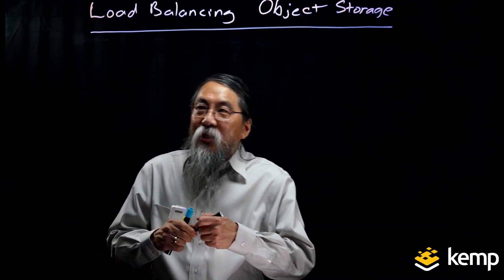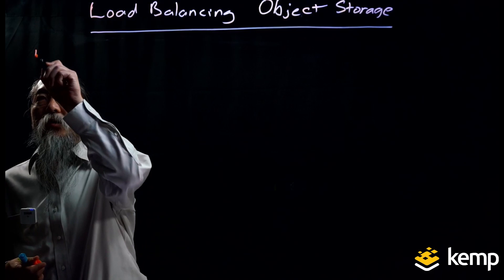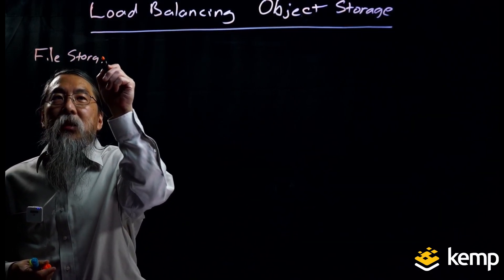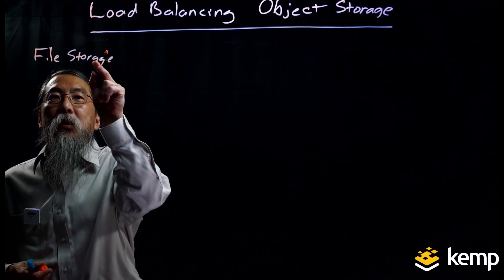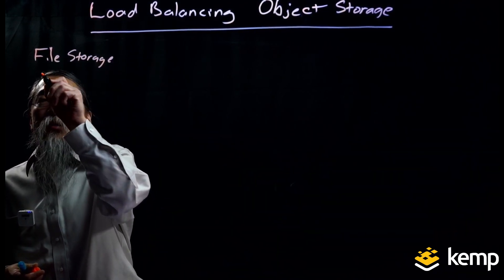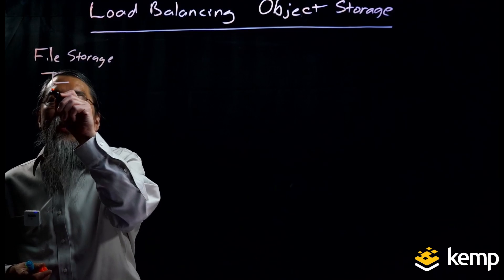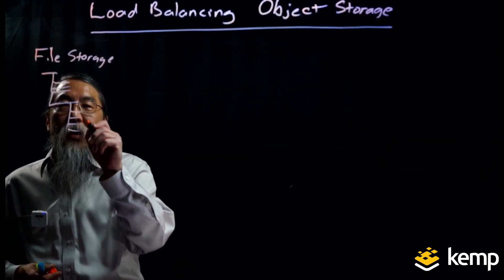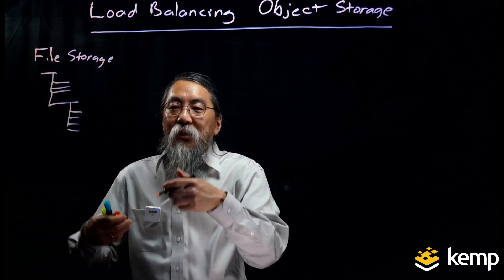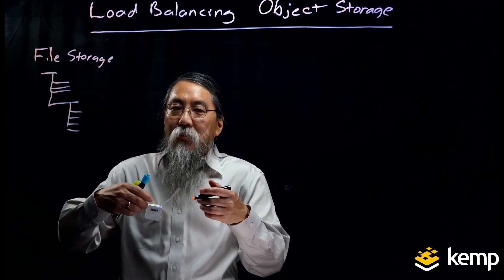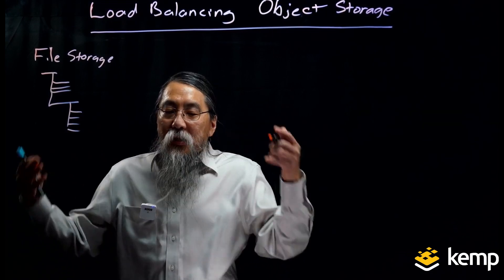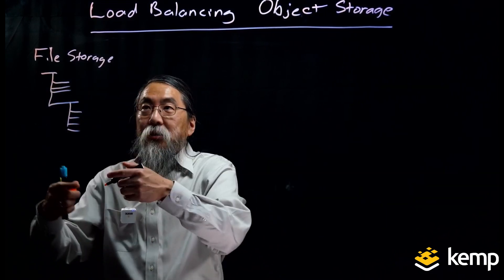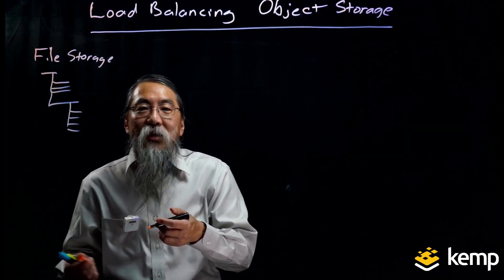And for some of the traditional storage systems like file storage, that might be the case. Because file storage has a hierarchical system in terms of how the files are stored, and you can't have redundant systems servicing those files easily and functionally. That's why traditional storage systems use clusters instead of load balancing.